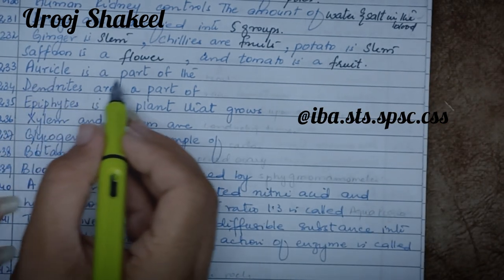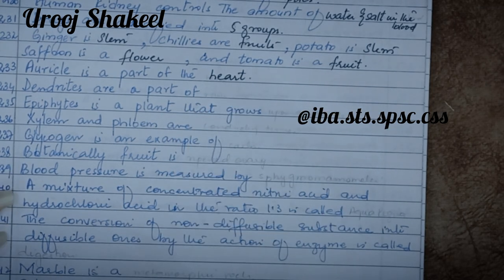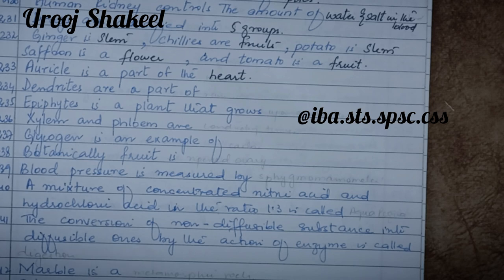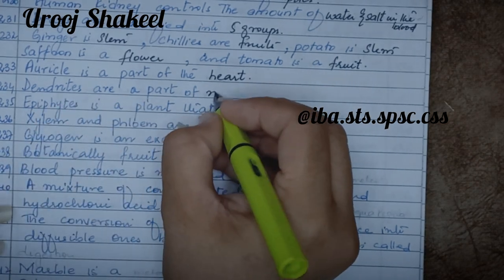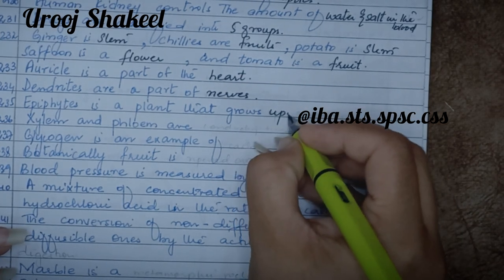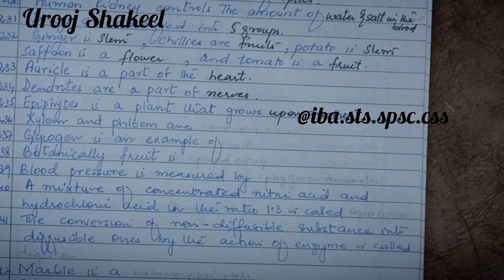The auricle is a part of the heart. Dendrites are a part of nerves in the body. Dendrons are plants that grow upon another plant. Xylem and phloem are used to transport water and minerals from the soil to every part of the plant — they conduct water and minerals from the soil to the parts of the plant.